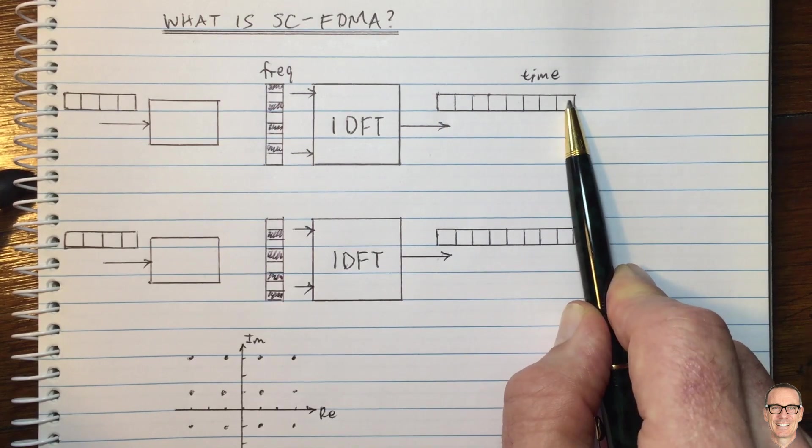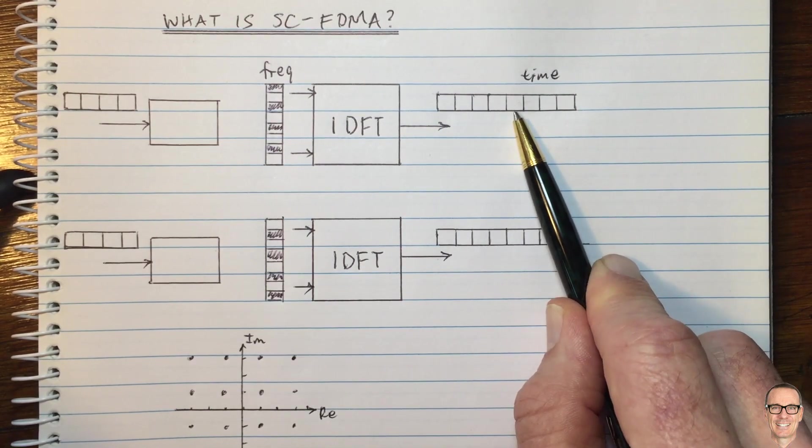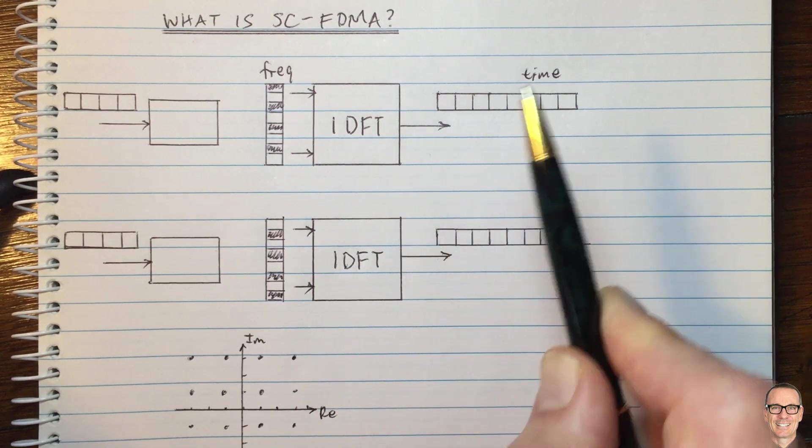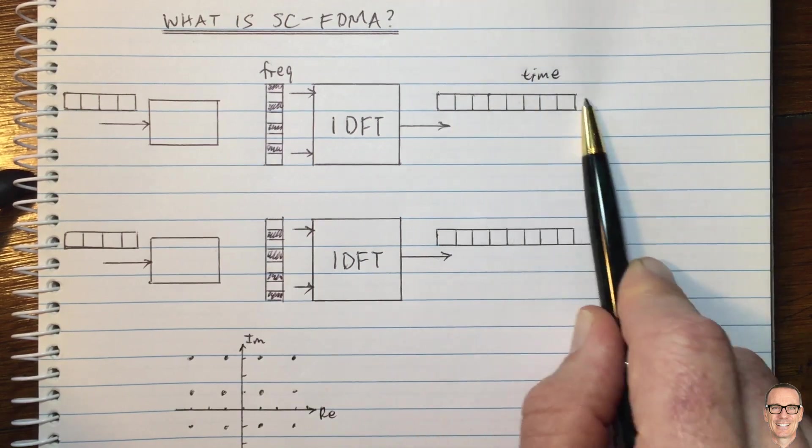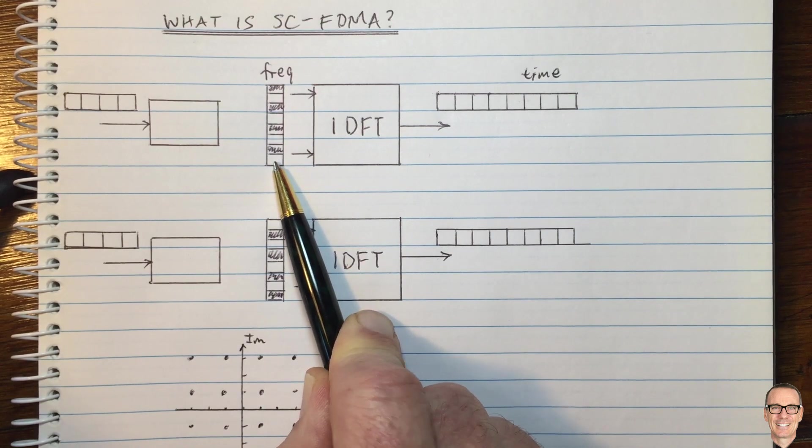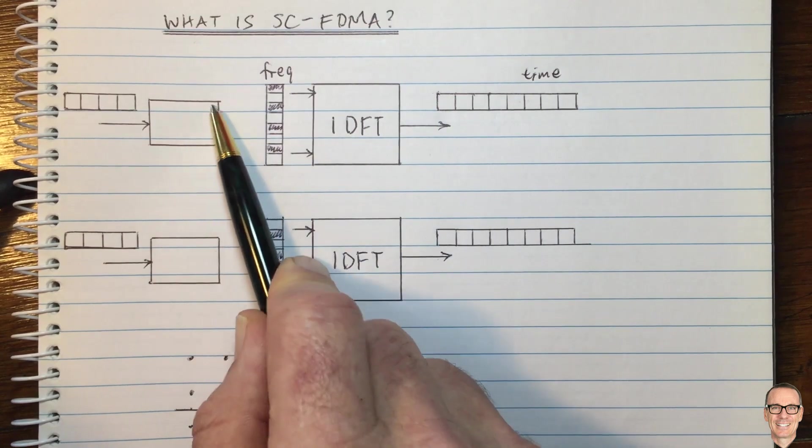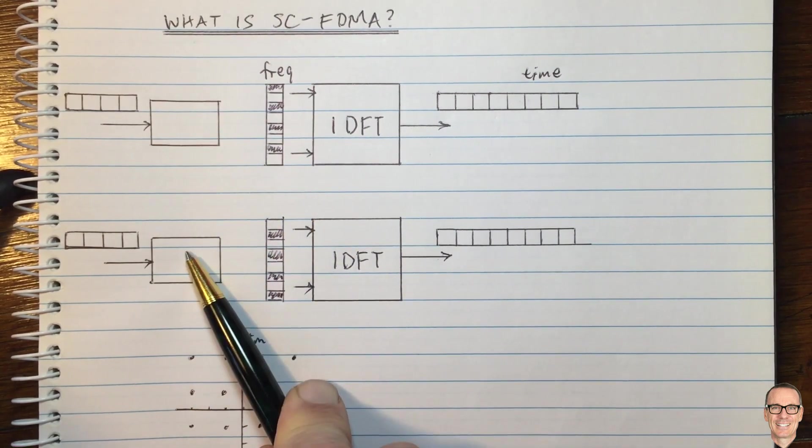And that does have a bounded peak to average ratio. The problem with that was the equalization, which is one of the main reasons we moved to OFDM systems. So is there a way to get advantages of bounded in time and also having the ability to do equalization in frequency? And that's what we're getting with SCFDMA, with the pre-processing. So what is this pre-processing?